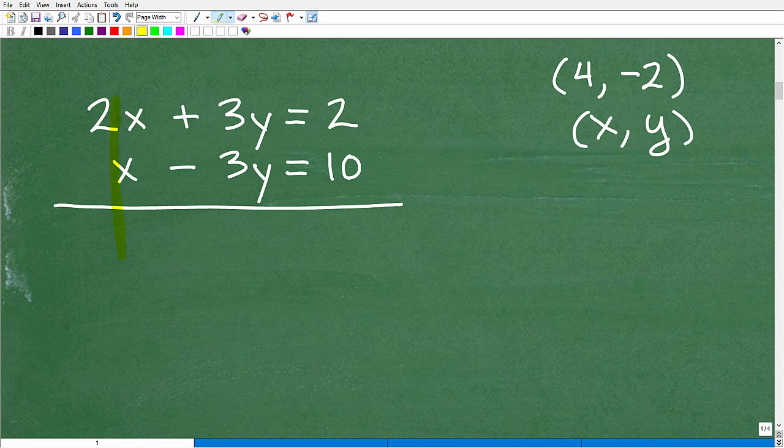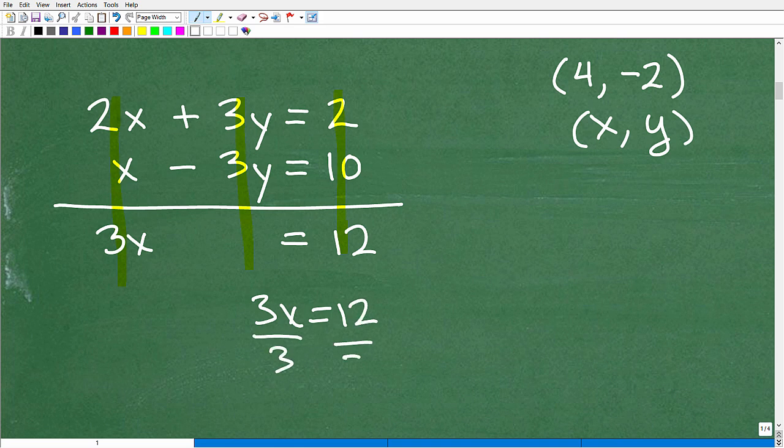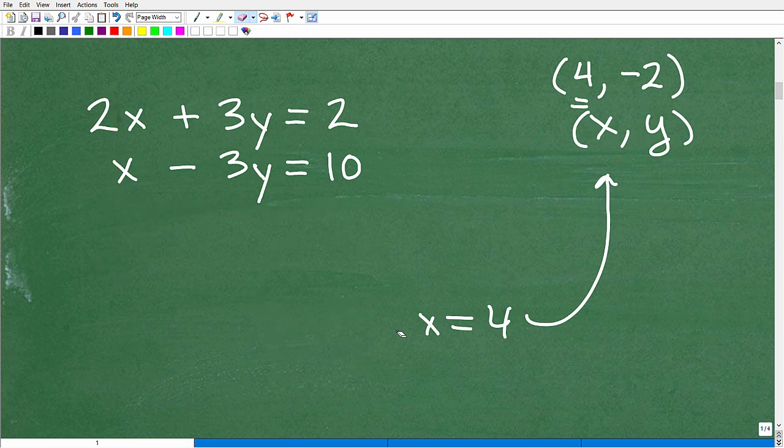Personally, I would use the elimination method. You could just add down, combine these into one equation. These 3y terms would go away. I would end up with 3x = 12. Then I would divide both sides by 3, so x = 4. And voila, x = 4, which is part of my solution. Then I can substitute that 4 back into any of these equations and get my y. That's just a quick reminder of what the elimination method is.